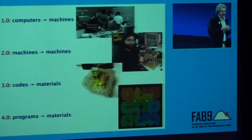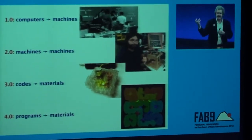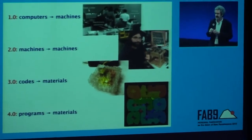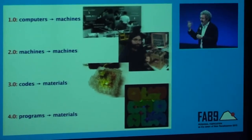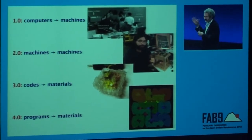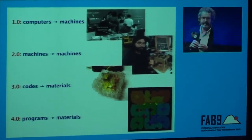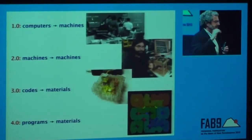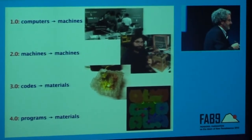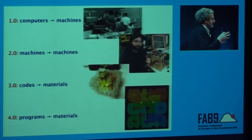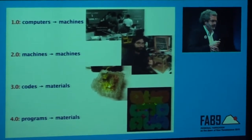And we're getting there in stages. The first stage is a computer controlling a machine, and that started in 1952. Today we're starting to use machines to make machines. Then we're starting to put codes into materials, and then finally programs into materials. And the end result is digital fabrication — programming nature. So that's the research.